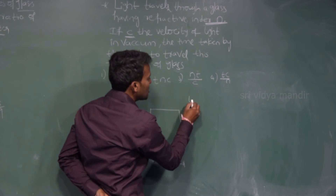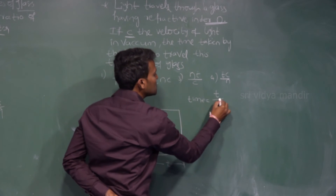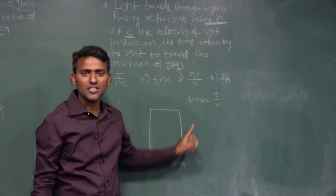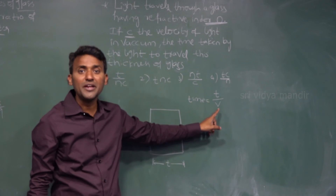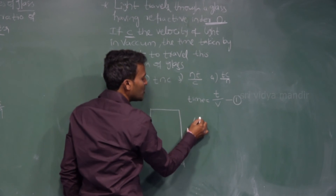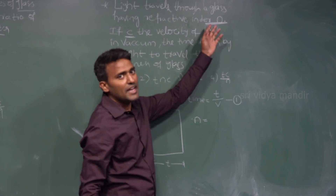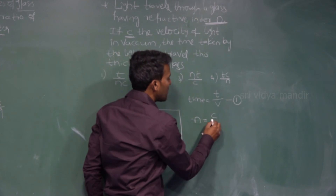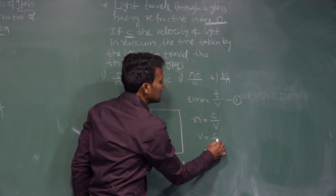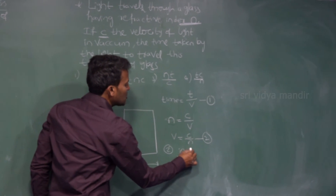Time equals distance — which is thickness T — divided by speed of light in the medium, V. This is equation 1. For equation 2: refractive index N equals C divided by V, so V equals C divided by N. Now substitute equation 2 into equation 1.